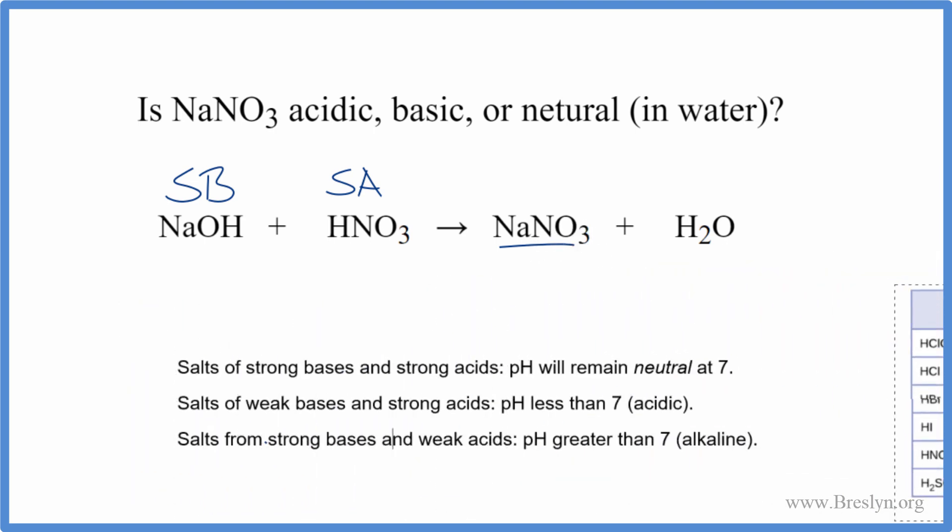So back to our rules here. And we can see that if we have a strong base and a strong acid, pH is neutral. It's seven.